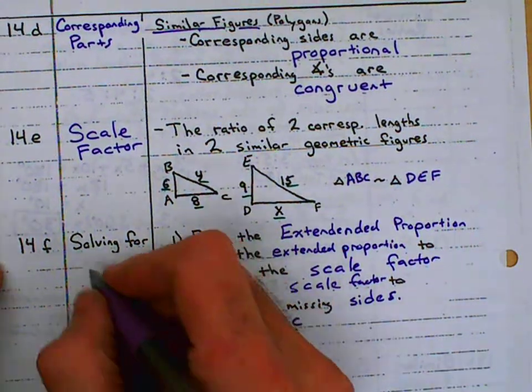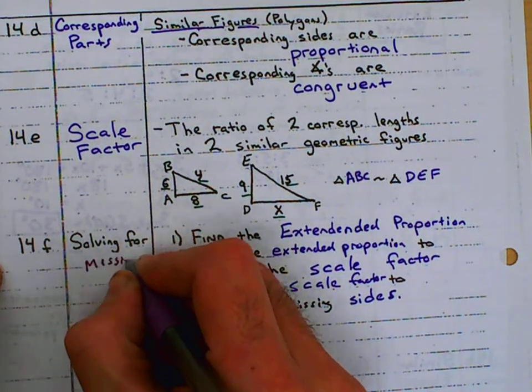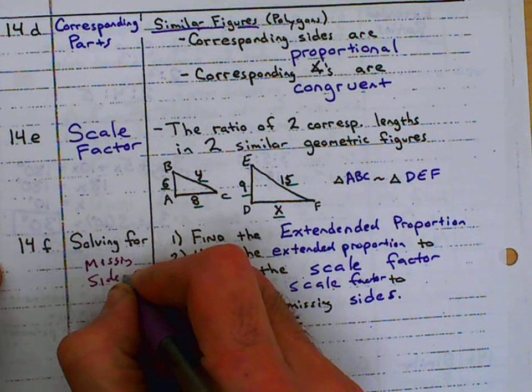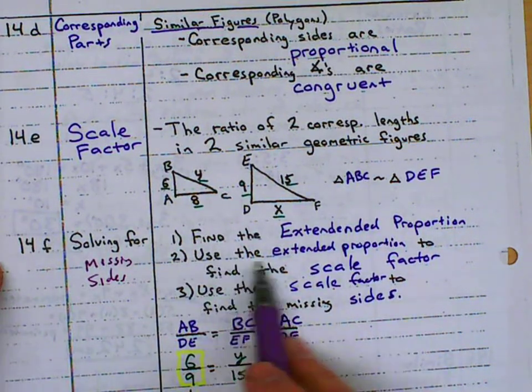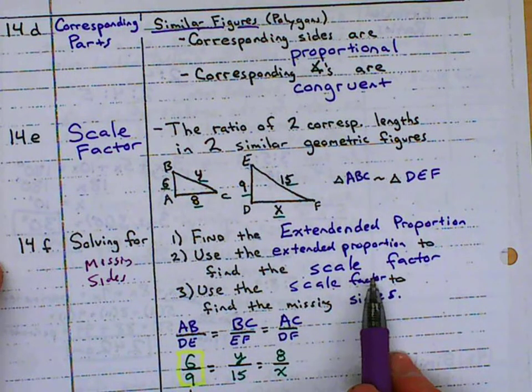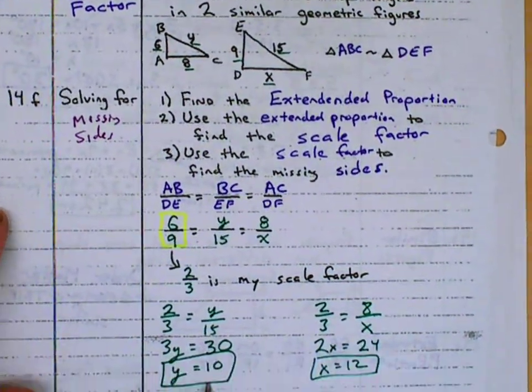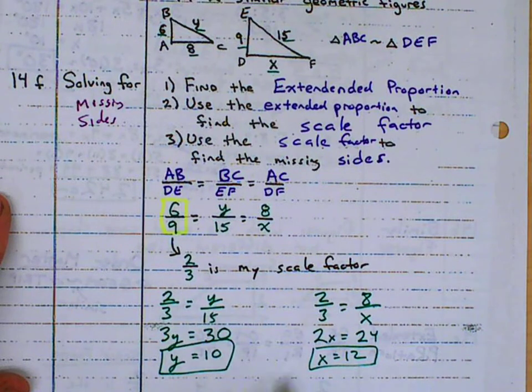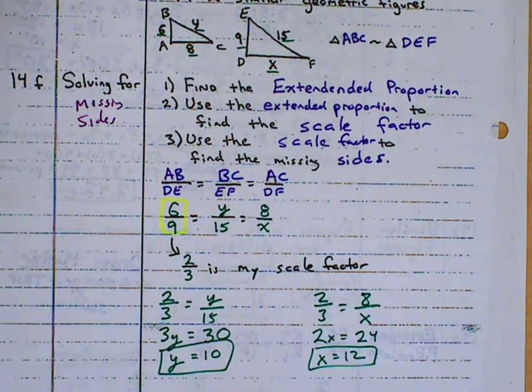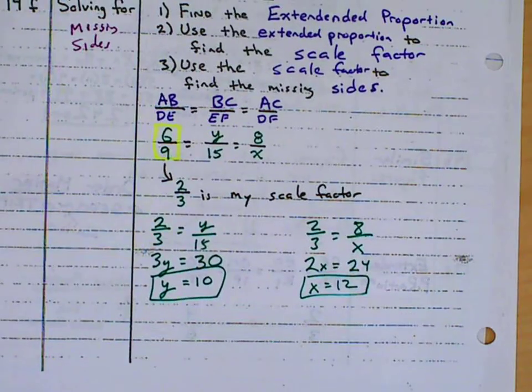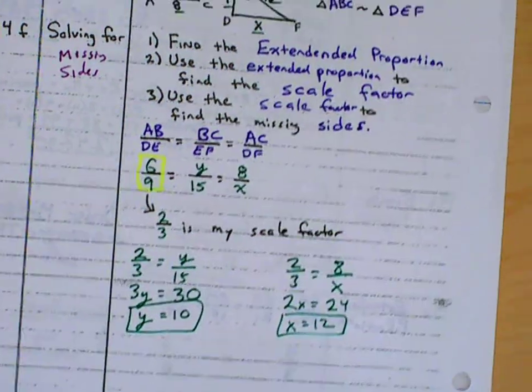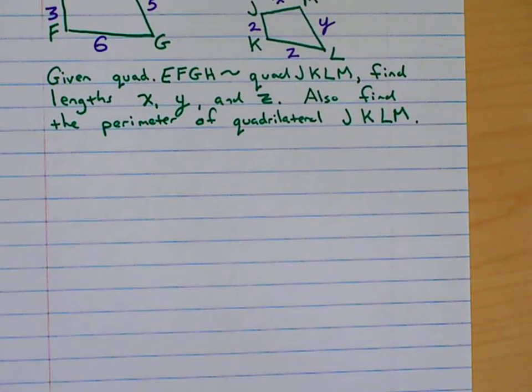When we're solving for missing sides, if you remember from our notes, we find the extended proportion, we use that to find our scale factor, and then we go back into the extended proportion and try to set it equal to the scale factor to solve for missing values. So that was our notes on this. And like I say, it's really a lot with 14f. We do touch on 14e, finding a scale factor.